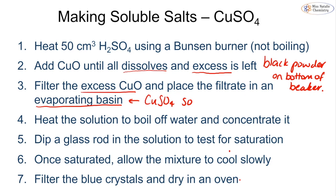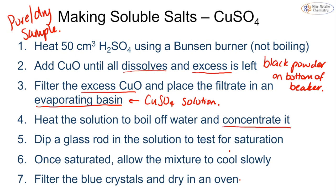To obtain a pure dry sample of copper sulfate, we need to remove the water. We heat the solution in the evaporating basin to boil off some — but not all — of the water to concentrate the solution. To check for saturation, dip a glass rod into the solution; once crystals start to form on the rod, the solution is saturated. Remove it from the heat and leave it overnight or for a couple of days in a warm place to cool slowly, evaporating the remaining water. Filter off any remaining water and soluble impurities, and dry the blue crystals in an oven or by patting them dry with filter paper.